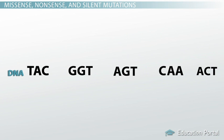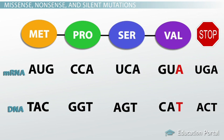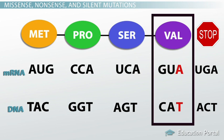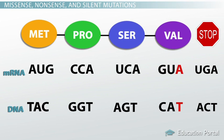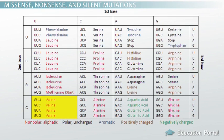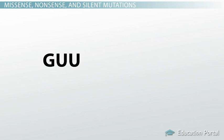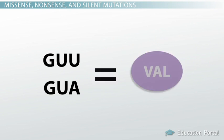Now we'll start over with a third kind of base substitution. Let's switch out the last A for a T. Can you guess which of the four amino acids will be affected? That's right — the fourth one. So we get the mRNA strand that codes for methionine, proline, serine, and valine. But hold on — the amino acid didn't change! Even though our codon changed from GUU to GUA, it still specified a valine, because both GUU and GUA code for valine.